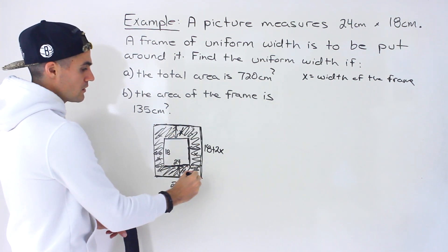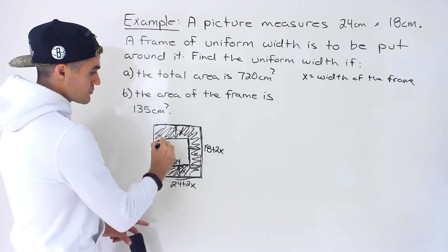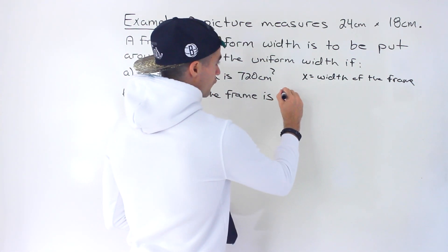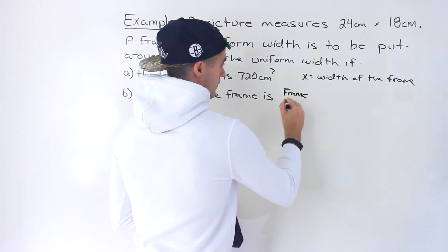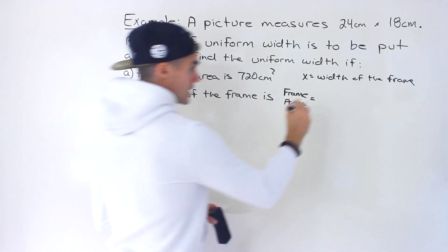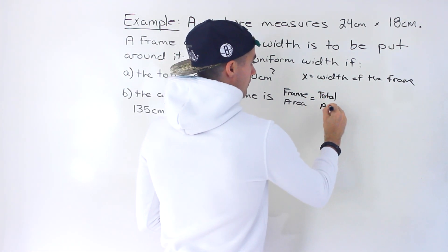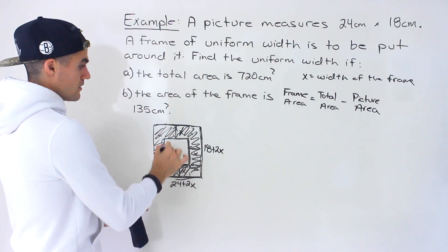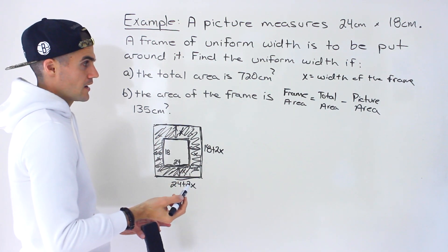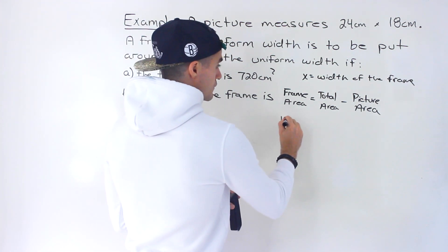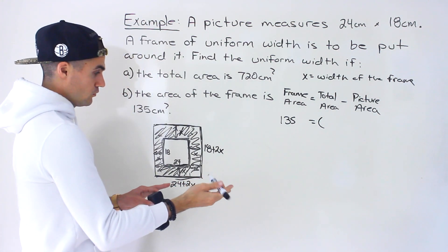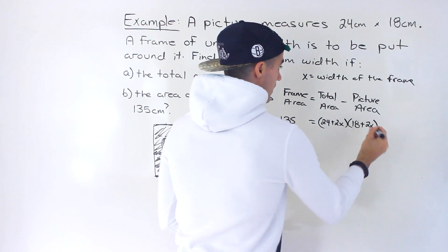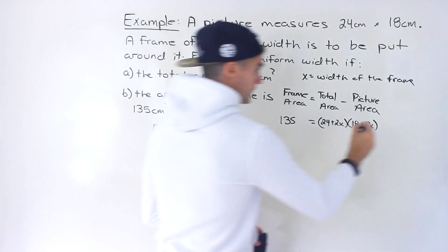We take the total area — frame plus picture — and subtract the area of the picture, which gives the frame area alone. So: frame area = total area − picture area. The frame area is 135; the total area is (24 + 2x)(18 + 2x); and the picture area is 18 times 24.